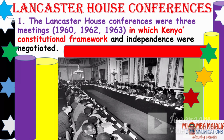The Lancaster House Conferences were three meetings — 1960, 1962, 1963 — in which Kenya's constitutional framework and independence were negotiated. Delegates used to fly there and stay, perhaps a month or two, discussing how to get a constitution. The constitution had to serve all parties: the white settlers, the Arabs, the Somalis in the north, big tribes, small tribes, and everyone needed to be catered for.